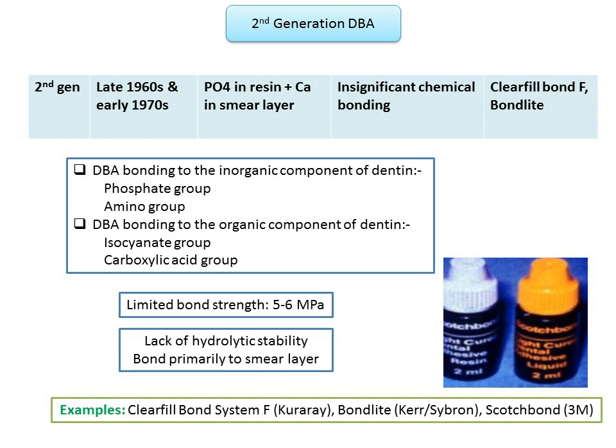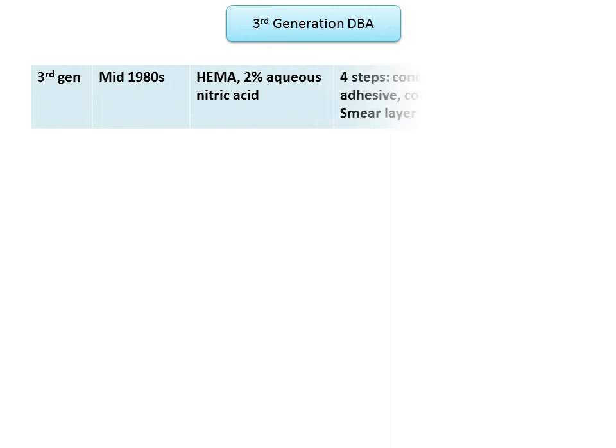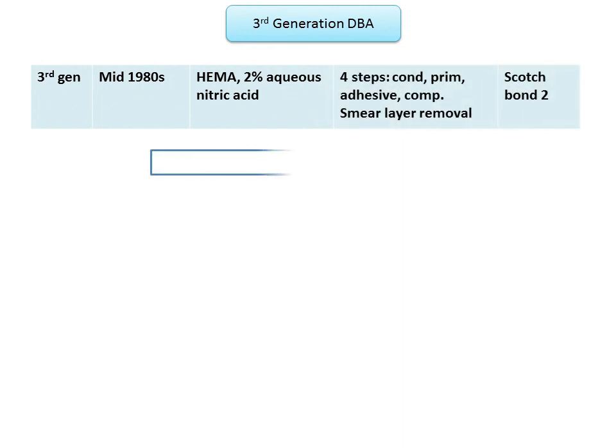The second generation dentine bonding agents did not deal effectively with the smear layer, so the third generation DBAs attempted to deal with the smear layer as well as dentinal fluid. For this they employed two approaches: either modification of the smear layer to improve its properties, or removal of the smear layer without disturbing the smear plugs that occlude the dentinal tubules. They used milder acids to avoid aggressive etching of dentine and prevent pulpal inflammation.